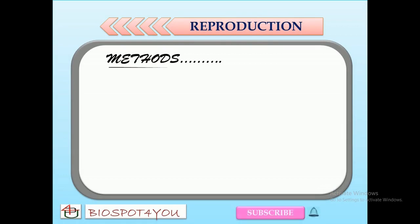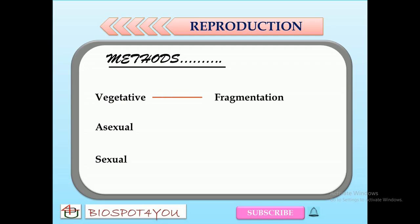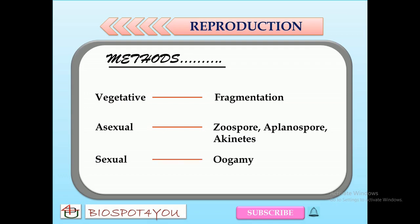Reproduction in genus Vaucheria of Xanthophyceae can happen vegetatively, asexually, or sexually. The vegetative method is by means of fragmentation. The method of asexual reproduction varies depending upon the habitat in which the algae occur. The common methods of asexual reproduction are zoospore formation, aplanospore formation, and akinete formation. Sexual reproduction in all species of genus Vaucheria is of oogamous type.